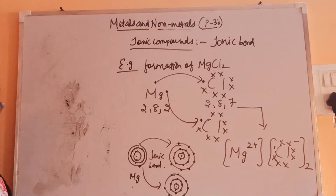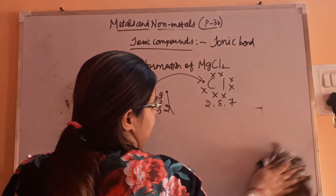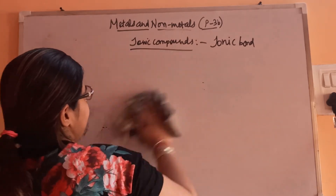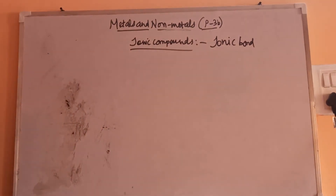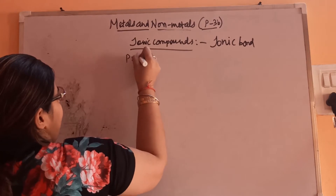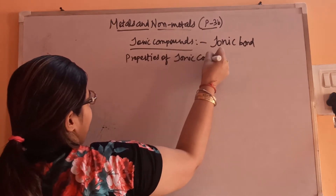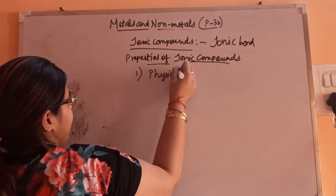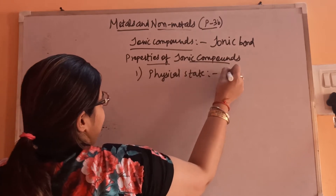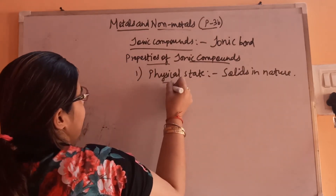Now let's see the properties of ionic compounds. This way you can show the formation of any ionic compound. All the ionic compounds are solid, and all the salts are your ionic compounds. Let's see the properties of ionic compounds one by one. First is physical state — all ionic compounds are solid in nature.